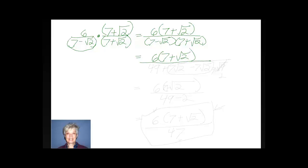I'm going to multiply first, outside, inside, last. That will give us 49 plus 7 times the square root of 2 minus 7 times the square root of 2 minus the square root of 4. Notice that the two middle terms — 7 times the square root of 2 minus 7 times the square root of 2 — equal 0. And the square root of 4 is 2, so we're going to be subtracting 2.